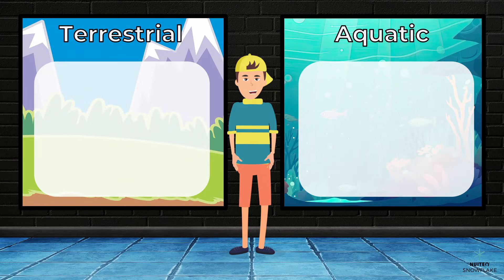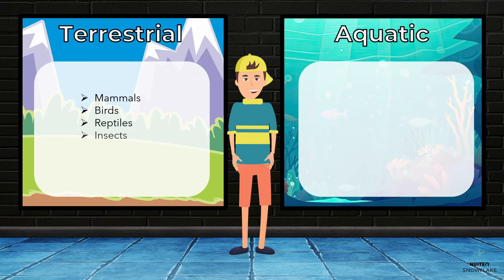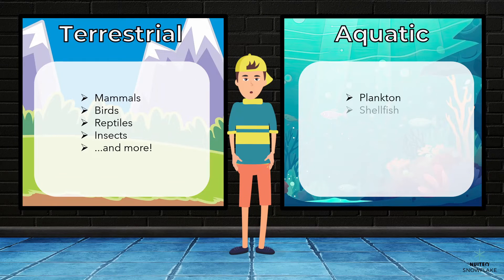In terms of diversity, there are many different types of terrestrial animals, like mammals, birds, reptiles, and insects. Aquatic animals also have a lot of diversity, from small creatures like plankton to big ones like whales.